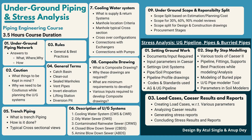Then we'll cover the basic terms generally used in underground piping: catch basin, clean out, sealed manhole, vent pipes, invert elevation, lifting station, and diversion pits. These are the basic terms present in any underground network, and once we understand them, we can understand any underground network.